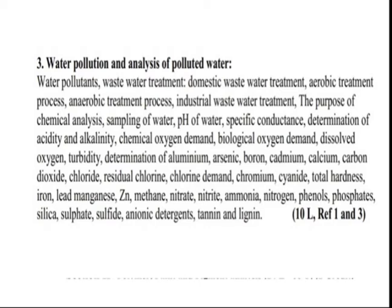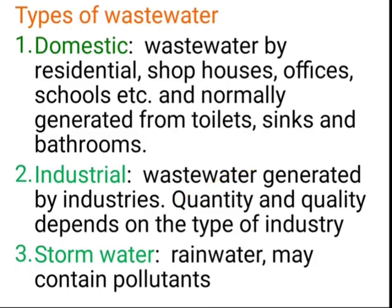This is our syllabus of the third chapter. We will start with our first point: water pollutants. There are three types of waters — domestic, industrial, and storm water. Domestic water is the wastewater generated by residential houses, shops, offices, schools, etc. Water from toilets, sinks, and bathrooms is generally included in domestic wastewater.